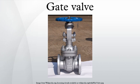The gate faces can form a wedge shape or they can be parallel. Gate valves are primarily used to permit or prevent the flow of liquids, but typical gate valves shouldn't be used for regulating flow, unless they are specifically designed for that purpose. Because of their ability to cut through liquids, gate valves are often used in the petroleum industry.